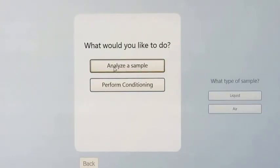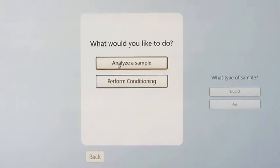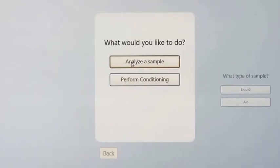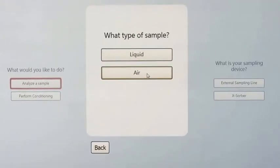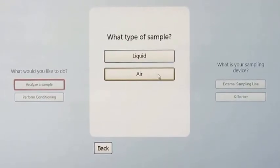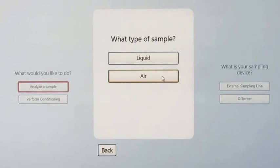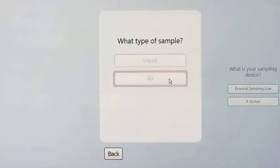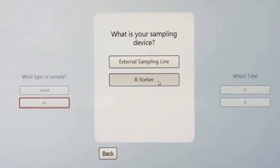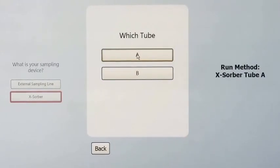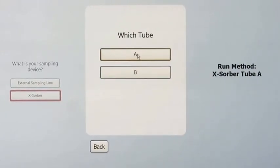The selector asks me a series of questions. It's asking if I'd like to analyze the sample or perform conditioning, and we do want to analyze the sample. Next it asks what type of sample, and today I use the Xorber, so I select air. Then it asks what was my sampling device, and we use the Xorber, and I select tube A because that's the tube we collected the sample on.